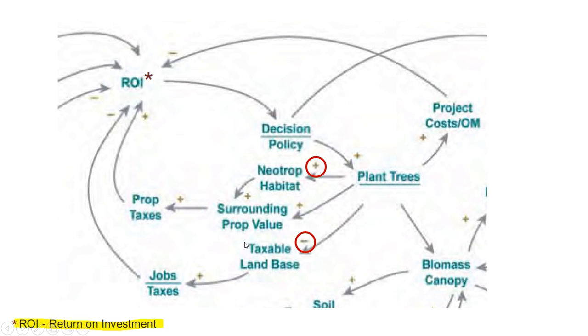Here with taxable land base, we have an opposite or inverse relationship, which means that as planting trees increases, taxable land base will increase as a result of more land available for development.